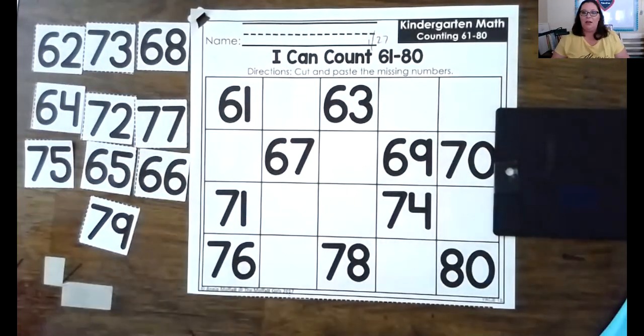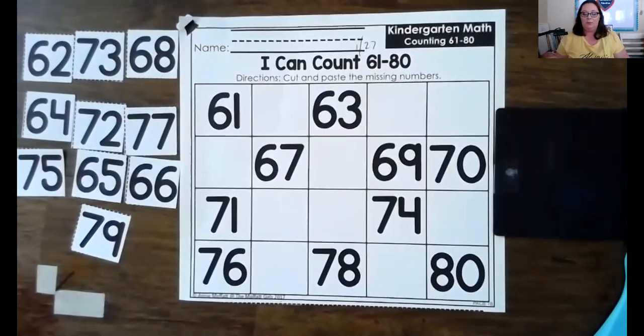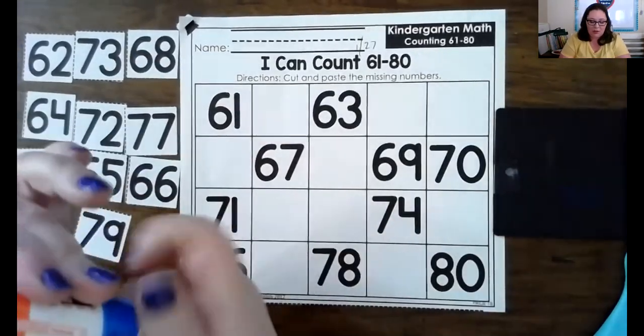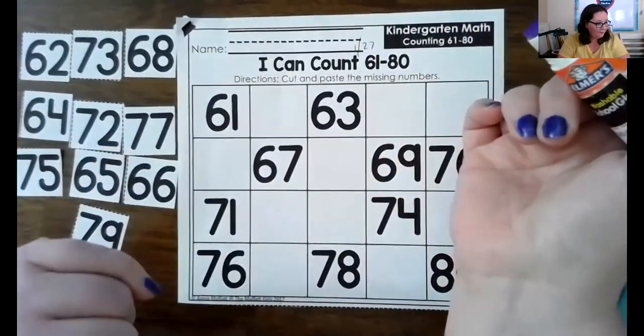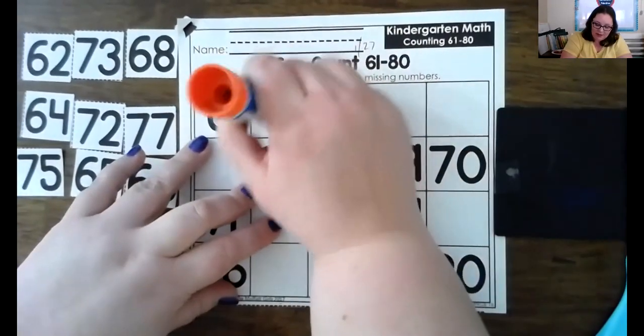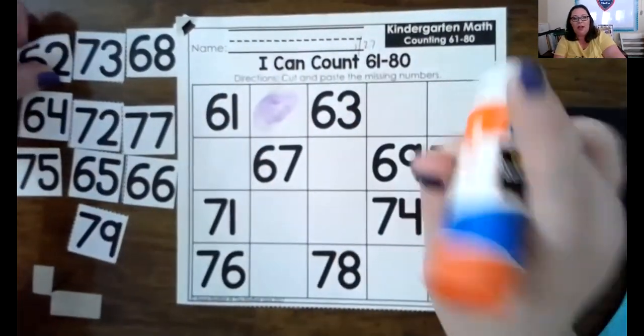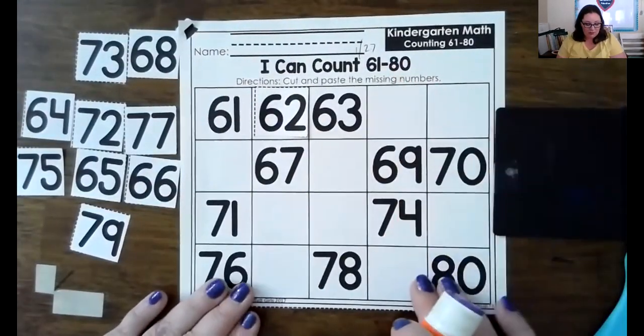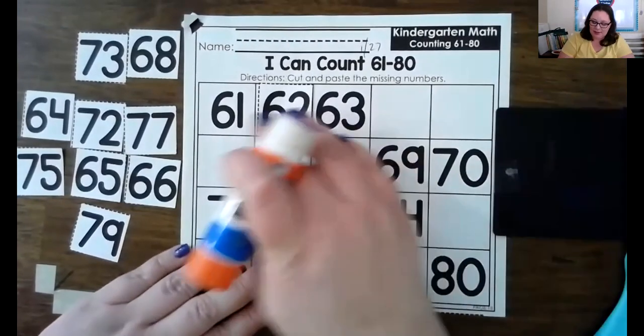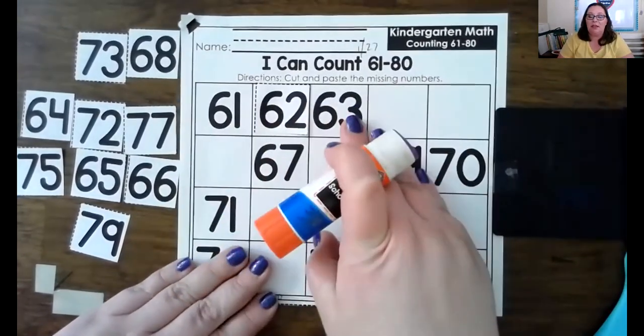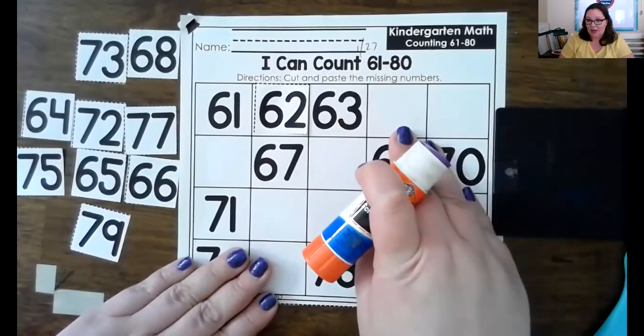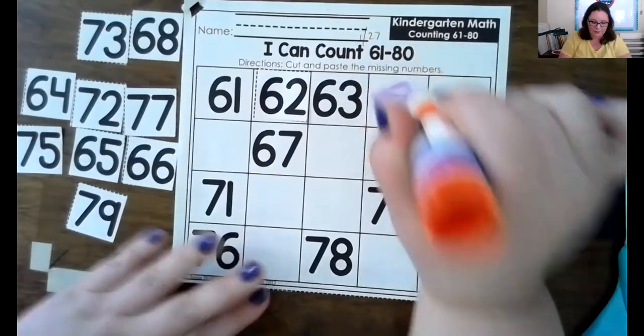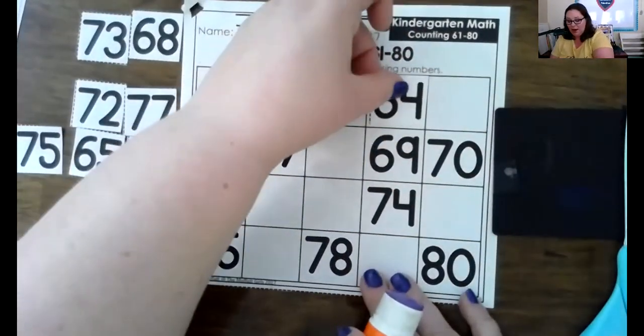All right, so in our numbers. So 61, what comes after 61? 70. No, 60. 62. Six groups of 10 and two ones. You're shaking the table, boo. Shall we? 61, 62, 63. What comes next?